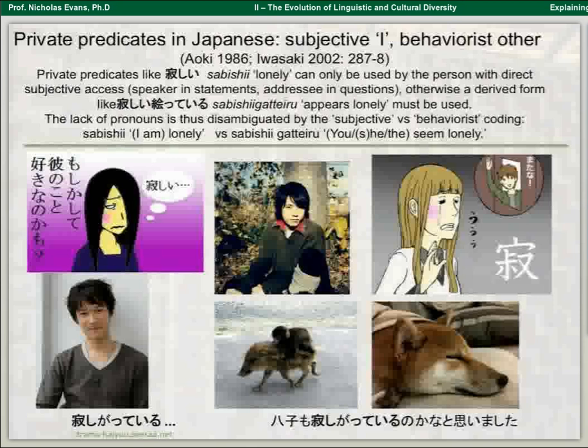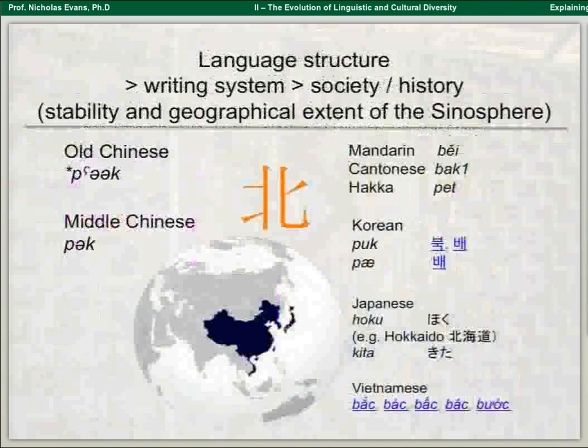What I did was Google images for sabishii, and these are the images I got — representing things from the point of view of the person themselves. When I Googled sabishii kateru, this is clearly someone talking about someone else's emotional state. And here we have the famous dog Hachiko, who looks lonely, but you can't be quite certain of its mental state, as any ethologist will know.